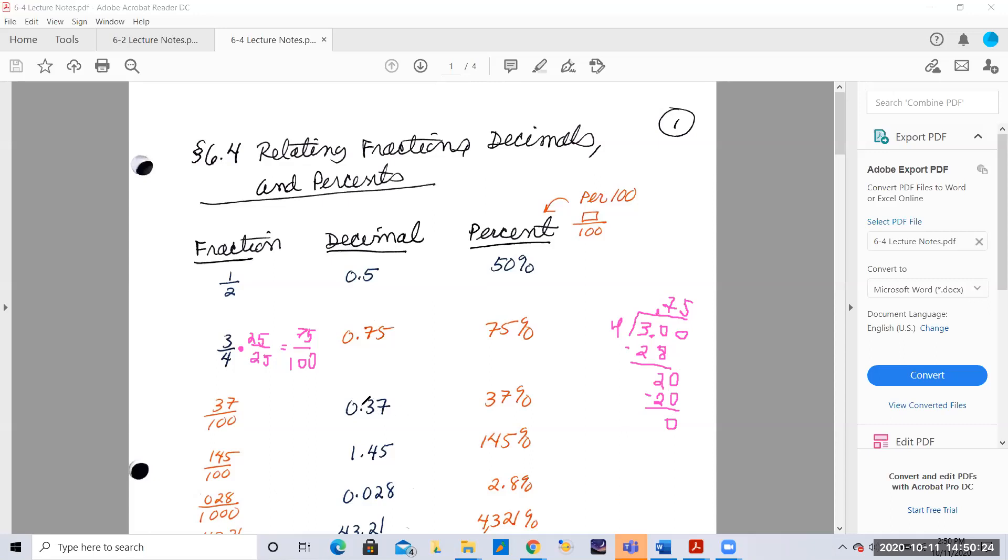And if you were given 0.37, that's 37 hundredths or 37 percent.